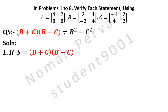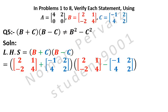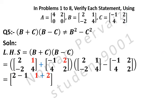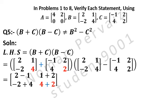So (B + C) into (B minus C) is written as: the value of matrix B plus the value of matrix C, then bracket with value of matrix B minus value of matrix C. We write 2 plus minus 1, then 1 plus 2, then minus 2 plus 4, then 4 plus 2. Then 2 minus minus 1, then 1 minus 2, then minus 2 minus 4, then 4 minus 2.